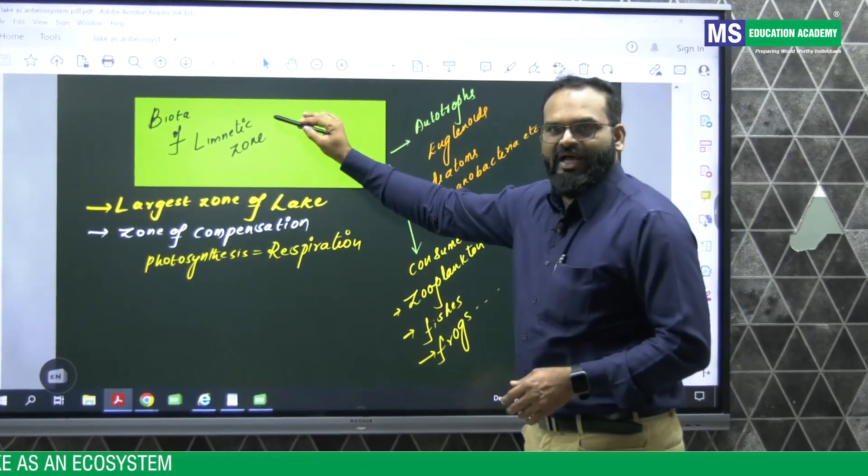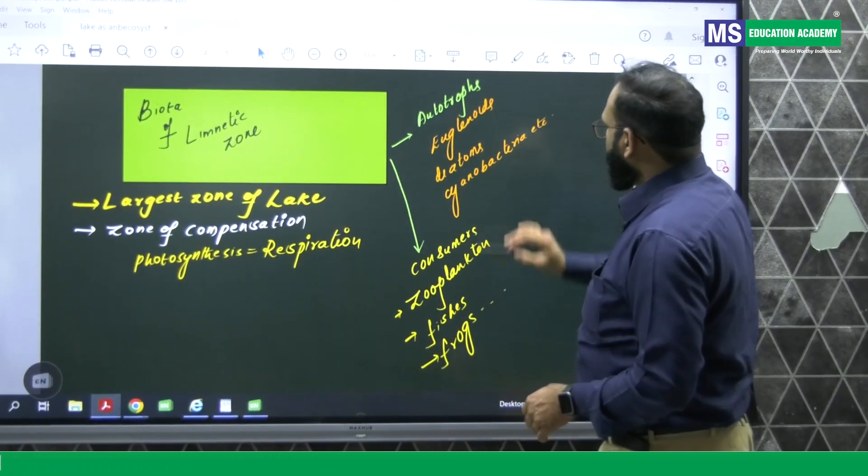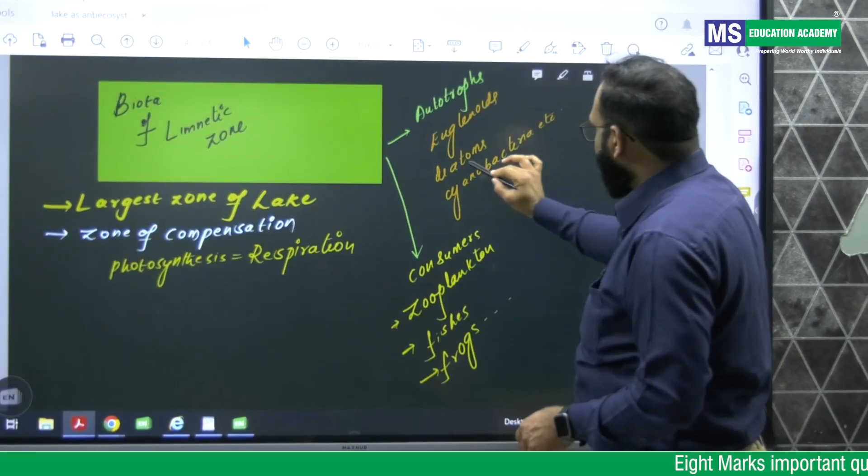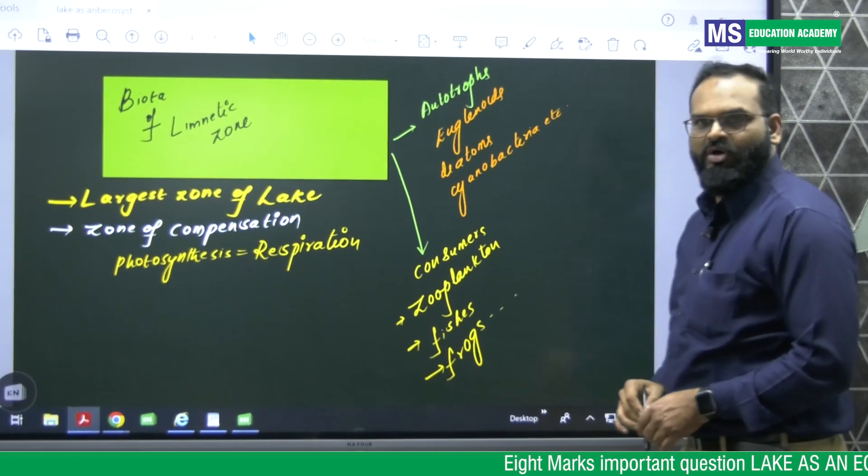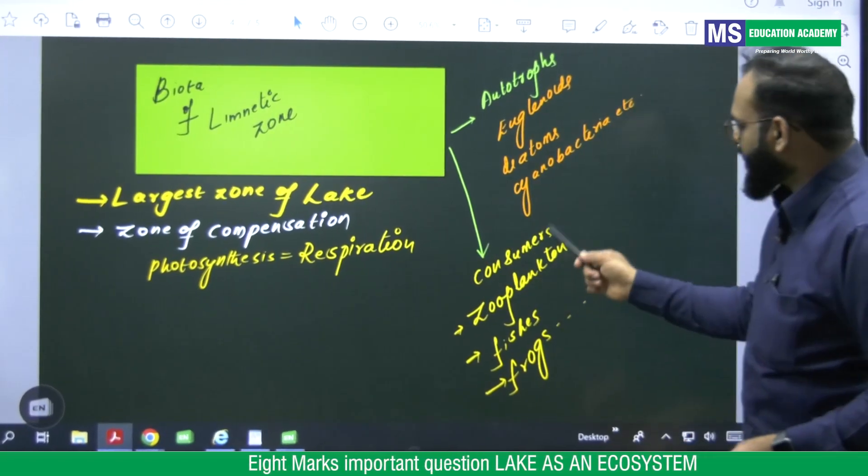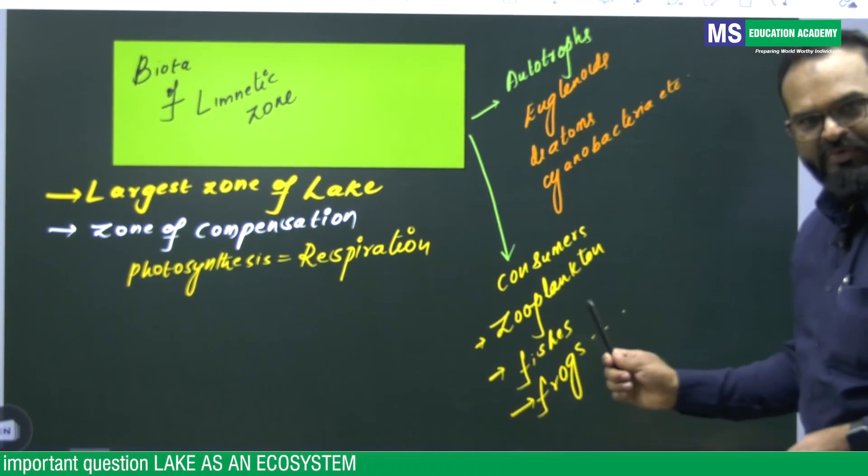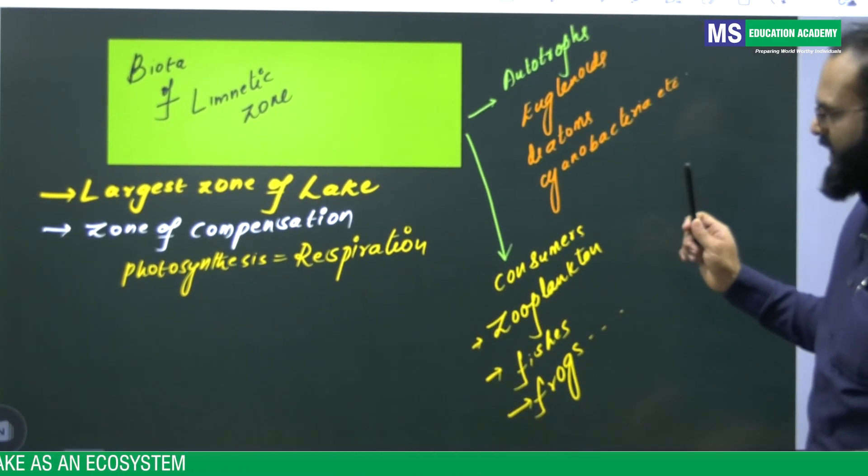Students, biota of limnetic zone, autotrophs are euglenoids, diatoms, cyanobacteria. And biota which are consumers present in limnetic zone, zooplankton, fishes, frogs, etc.